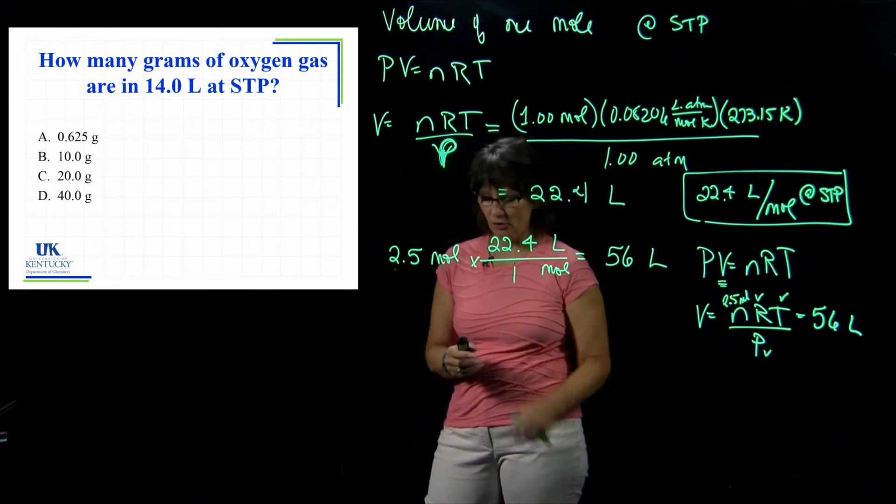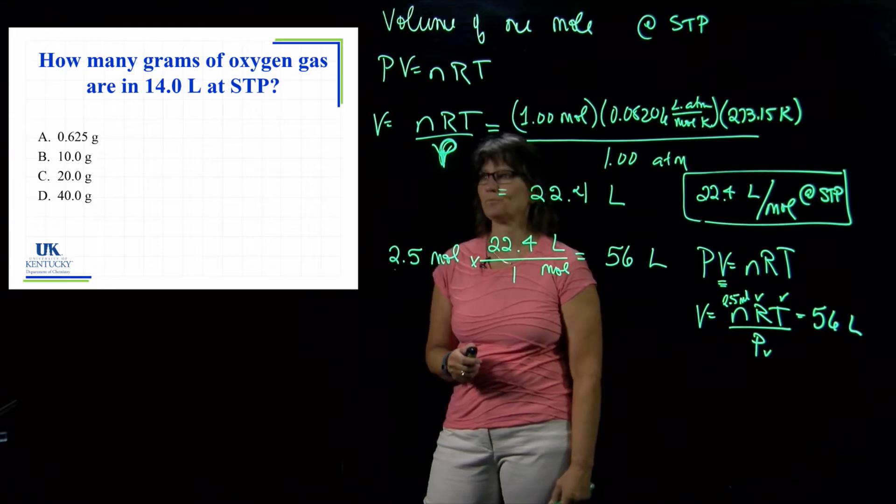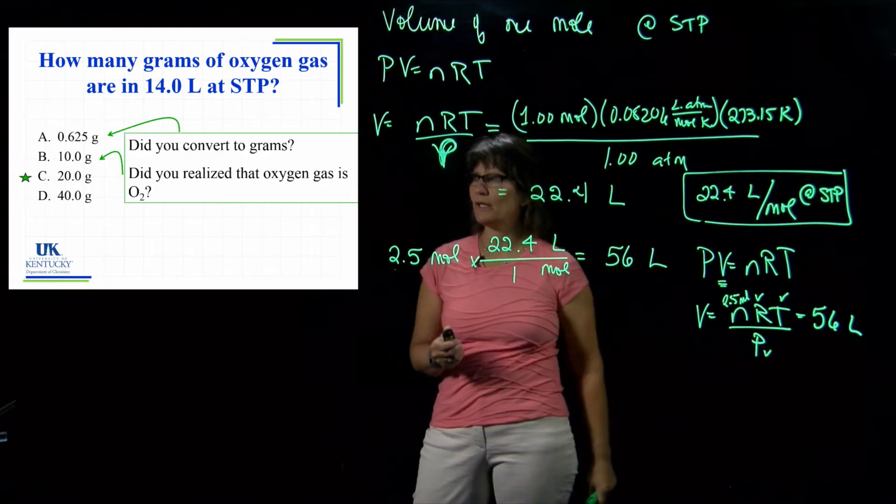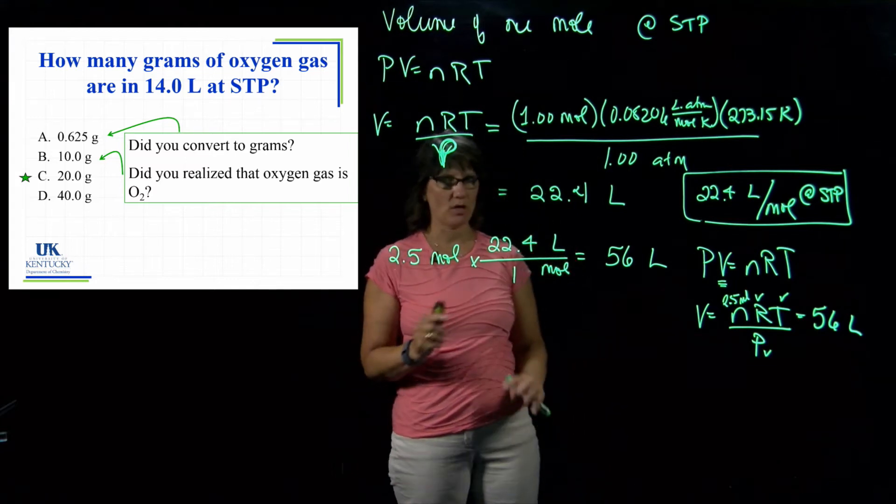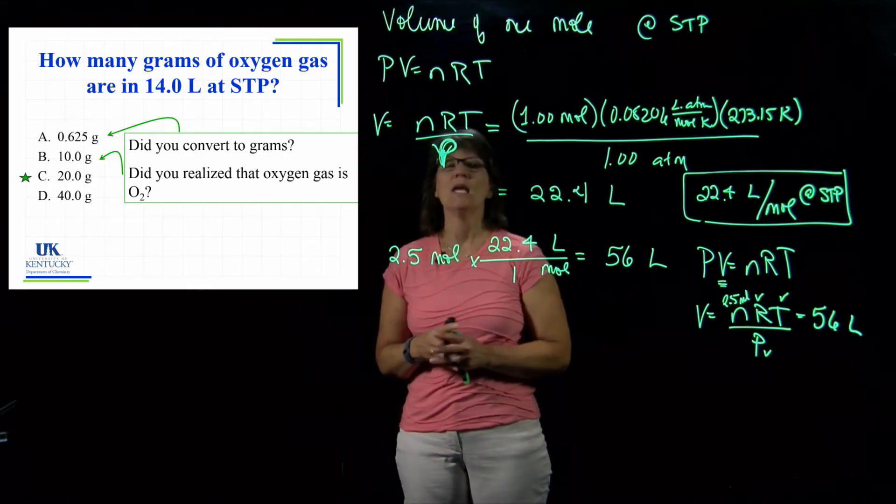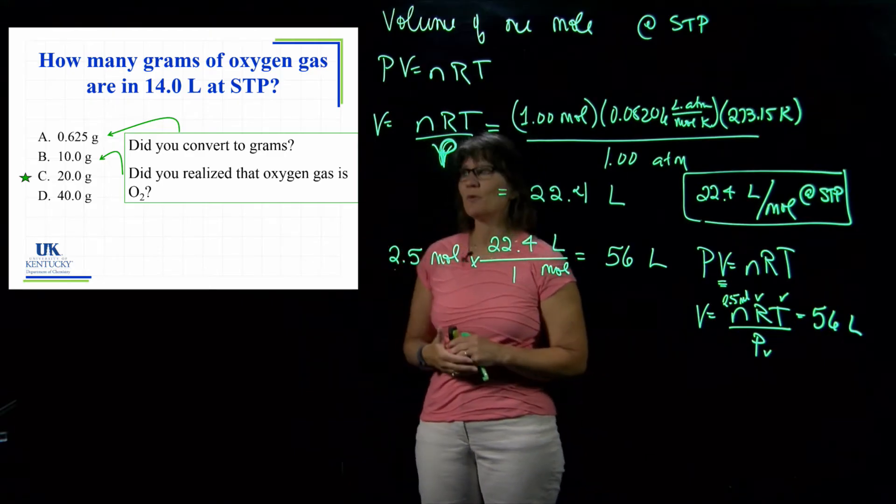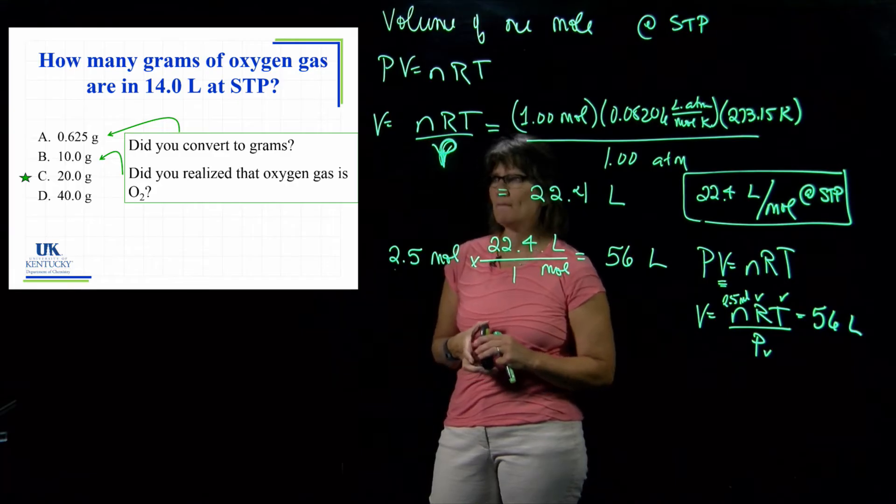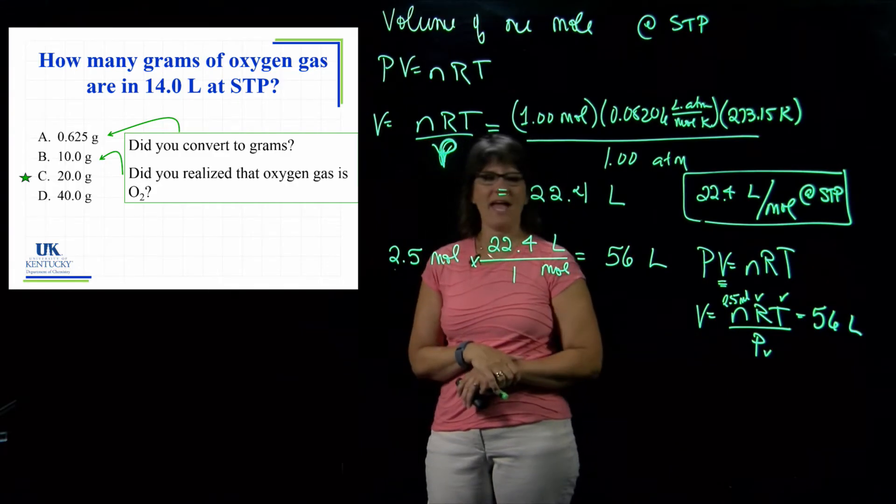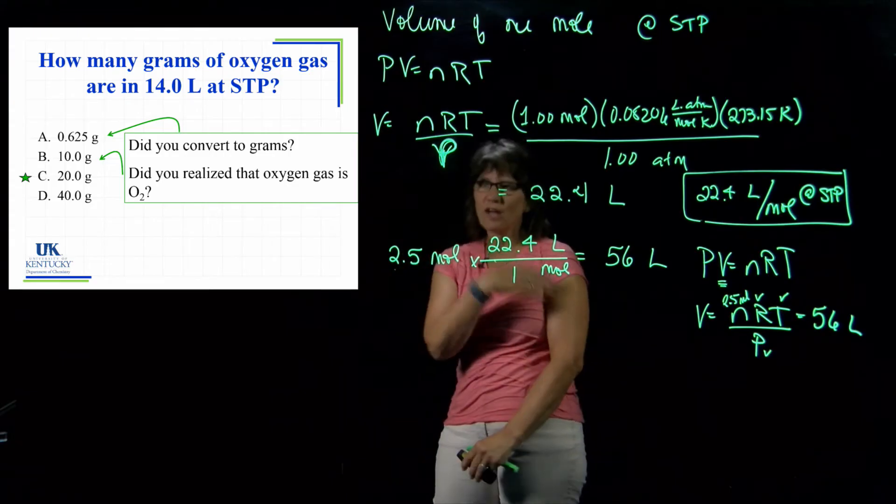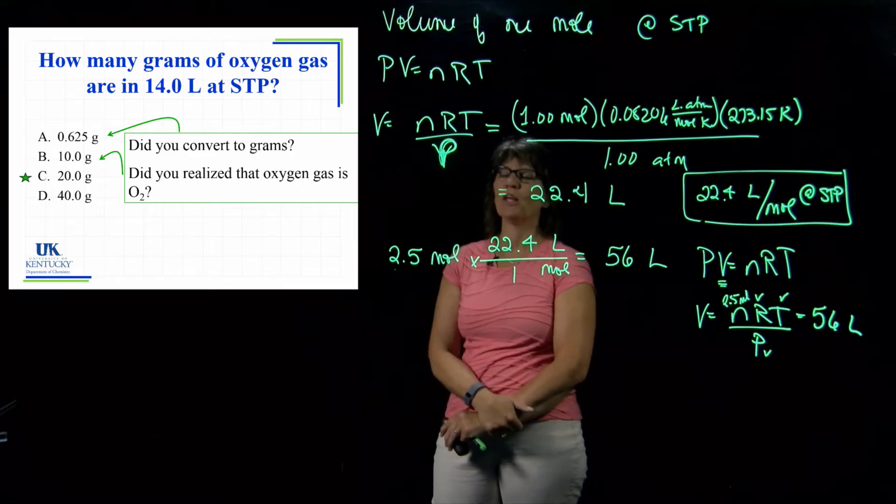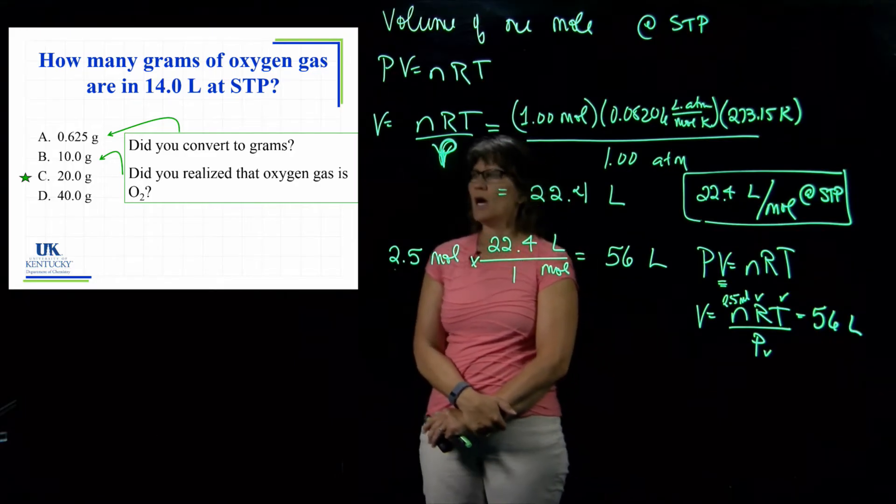Hopefully you came back after working through it. The right answer is 20 grams. If you got that, you are done with this section. If you didn't get it, here are some common mistakes. If you used this relationship and you stopped with moles and forgot to go on to grams, you might have got 0.625.